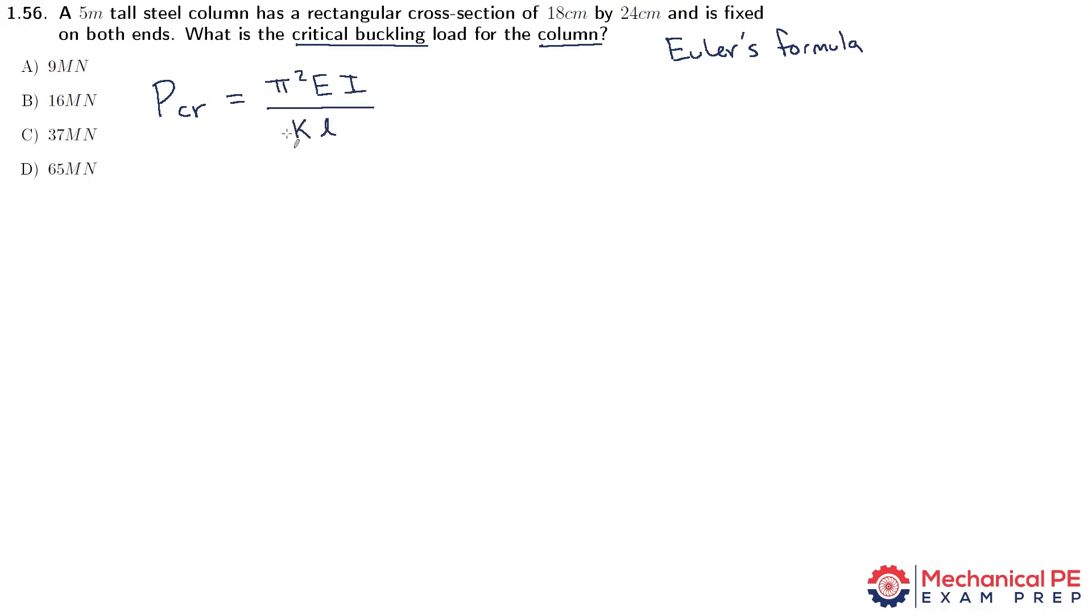Divided by k times L quantity squared, where k is something called the theoretical effective length factor. You need a hyphen for that as well, so theoretical effective dash length factor. I tend to just remember length factor and search that. The point being that you have different end conditions. Here we have fixed on both ends. And when you're fixed on both ends, there's a little list there. It tells us that the k factor should be 0.5.